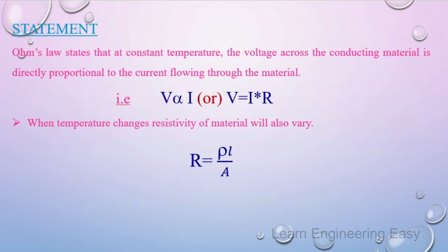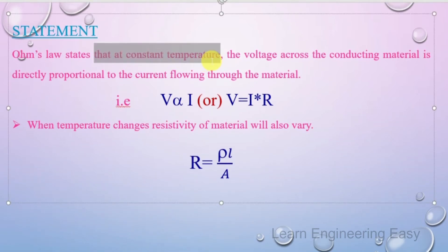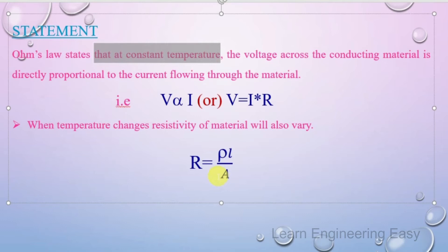The voltage across the conducting material is directly proportional to the current flowing through the material. The conducting material may be copper, silver, gold, or aluminum. The proportionality holds as long as the temperature remains constant.